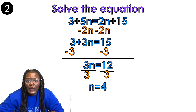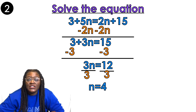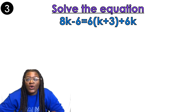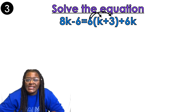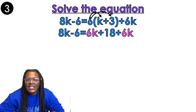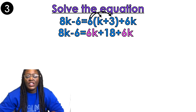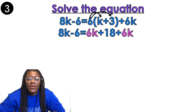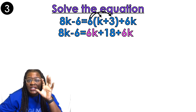Look at this big equation. I have 8k minus 6 equals 6 parentheses k plus 3, plus 6k. Distributing is the first step, so I'm going to distribute the 6 into the k and the 6 into the 3, which gives me 6k plus 18. I bring everything else down as is. Step number two is combine like terms.